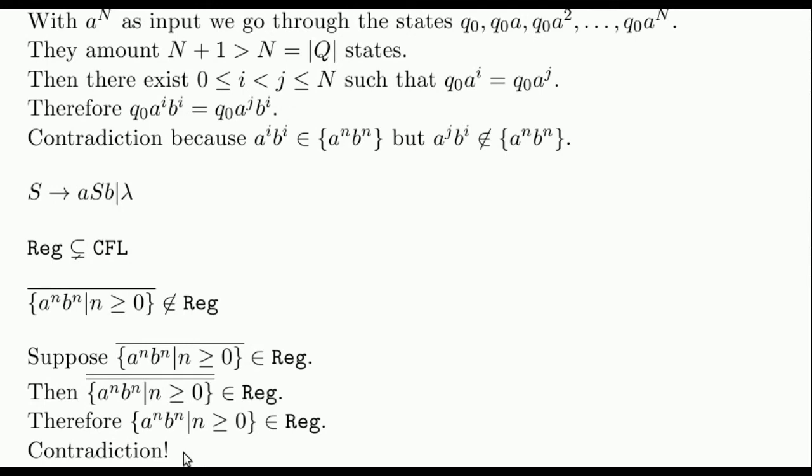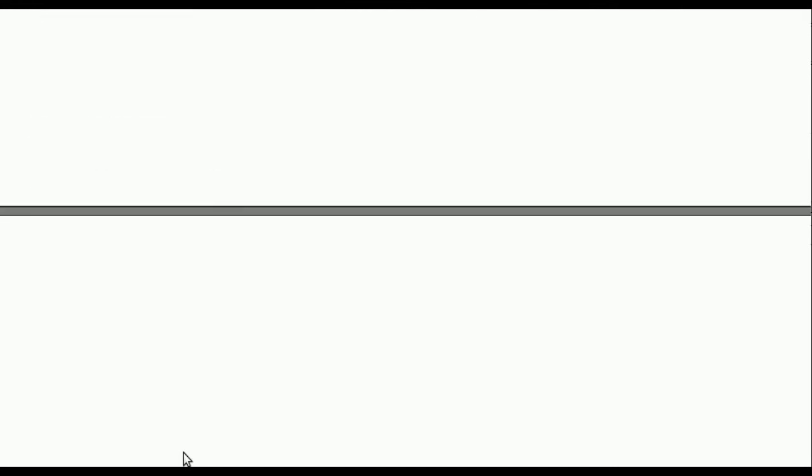Note that we have used the property that regularity is preserved under the complementary operation. We know many other closure operations for regular languages, such as union, intersection, concatenation, star, reverse, direct morphism and inverse morphism. Proceeding analogously to the previous proof, we can show the non-regularity of other languages using these properties.